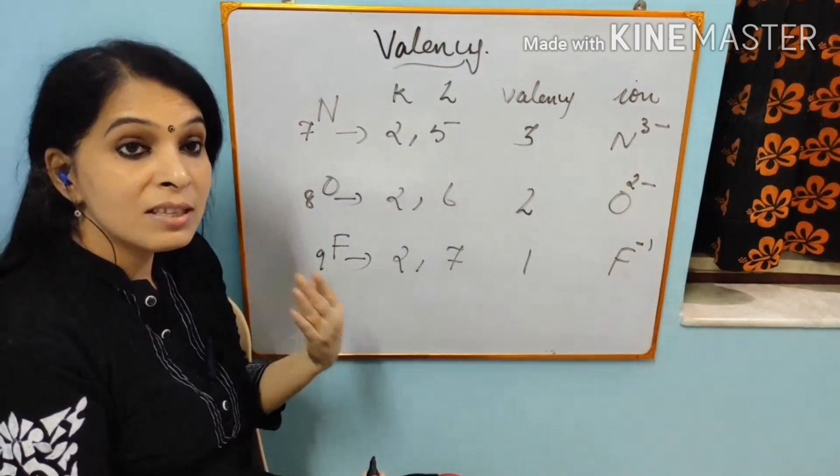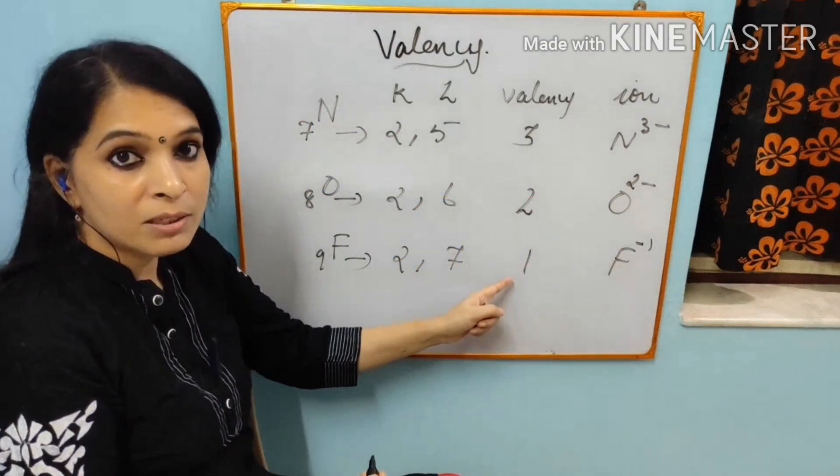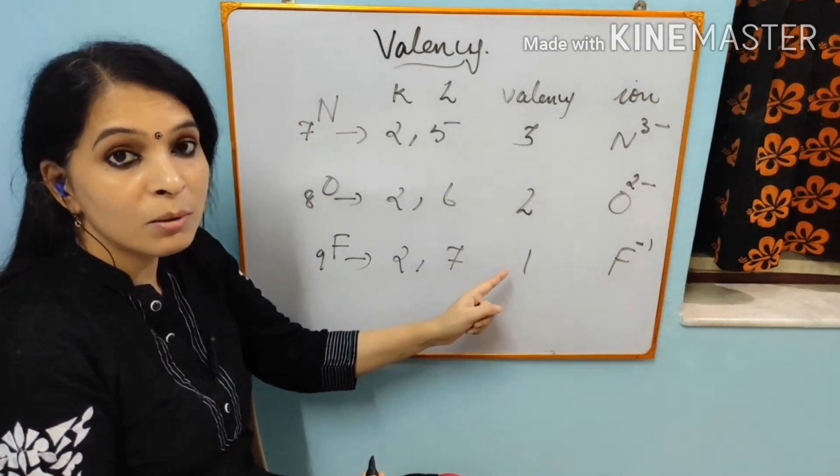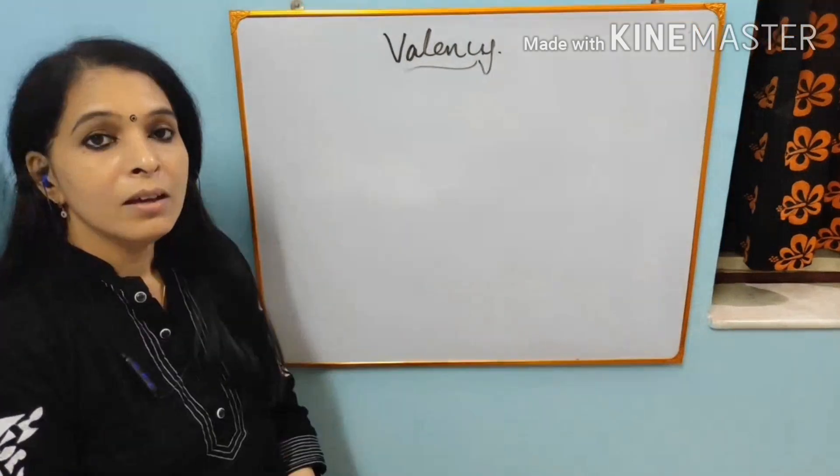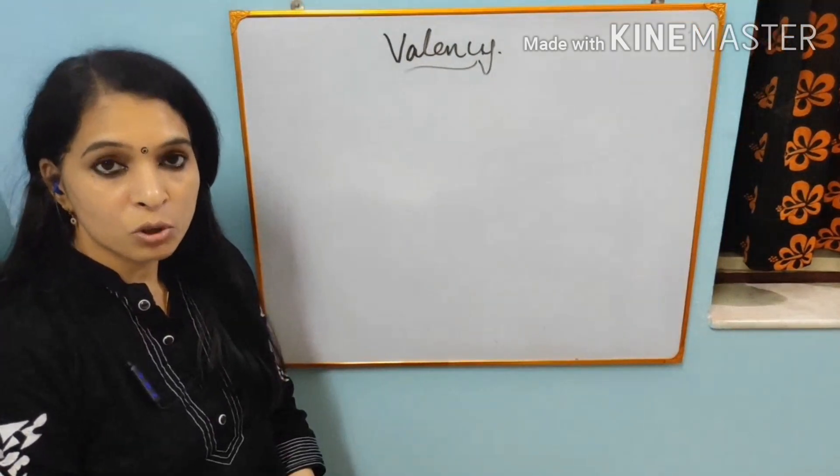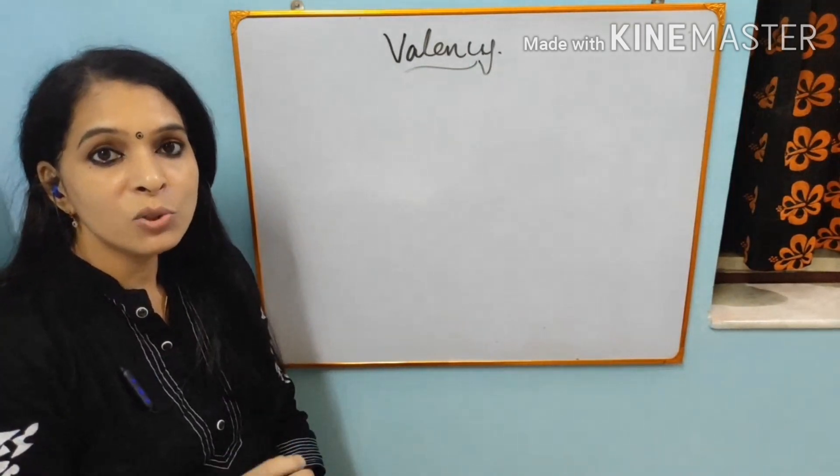This is how we are seeing the valency of the metals and non-metals. But this is not easy to remember. So I told you from the periodic table how to find out the valency easily. Now we will see what is polyatomic ion. Poly means many. Ion means a charged atom.